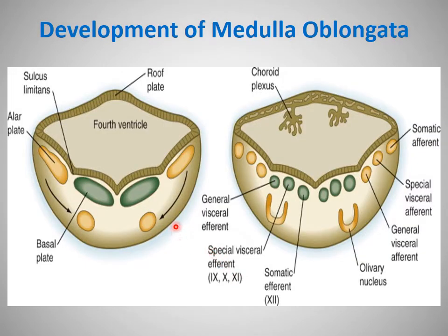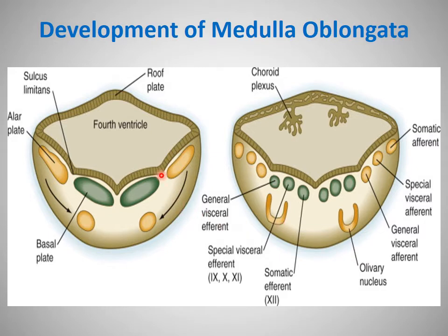Due to unequal growth and formation of the pontine flexure, the cavity of the fourth ventricle widens. The alar plate migrates in different directions and the basal plate comes to lie at the base of the fourth ventricle. Some neuroblasts from the alar plate migrate more ventrally to form the inferior olivary nuclei. The alar plate and basal plates are divided into different cell columns — alar plate neuroblasts always form sensory neurons and basal plate neuroblasts form motor neurons.